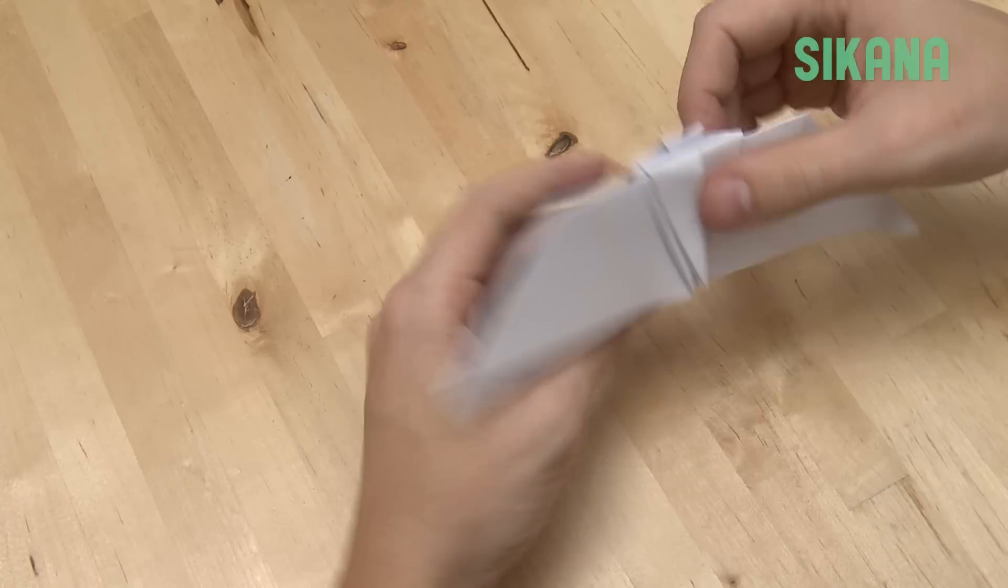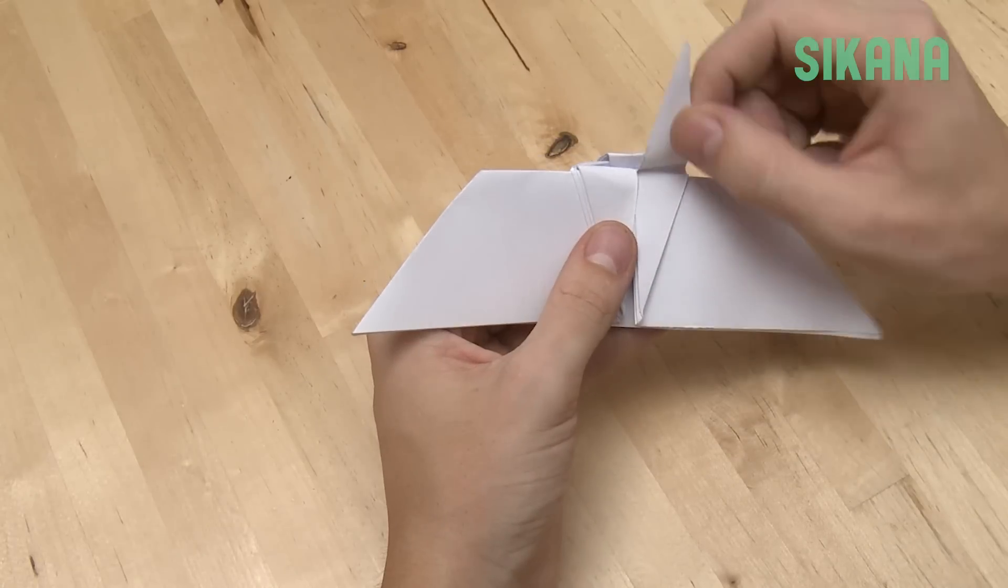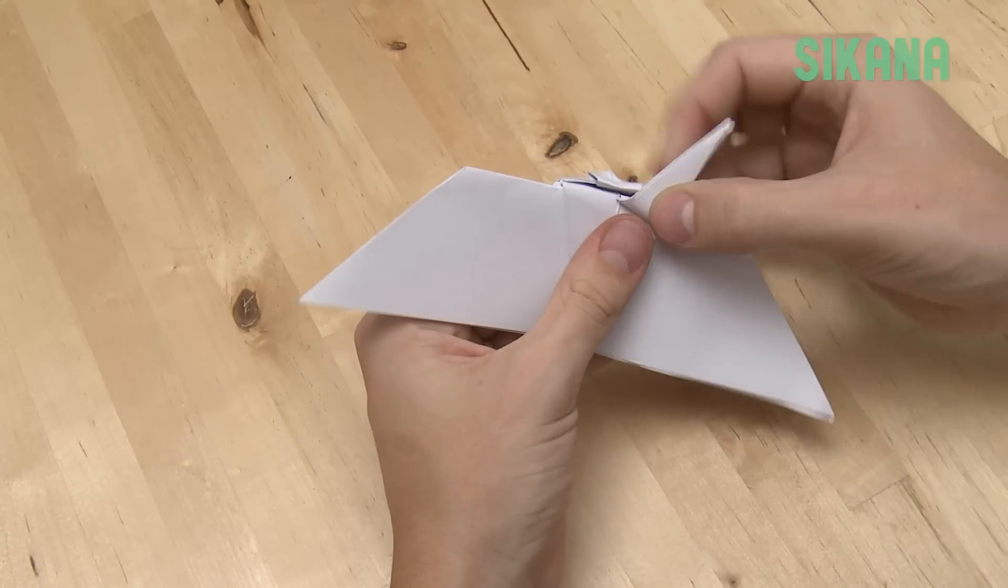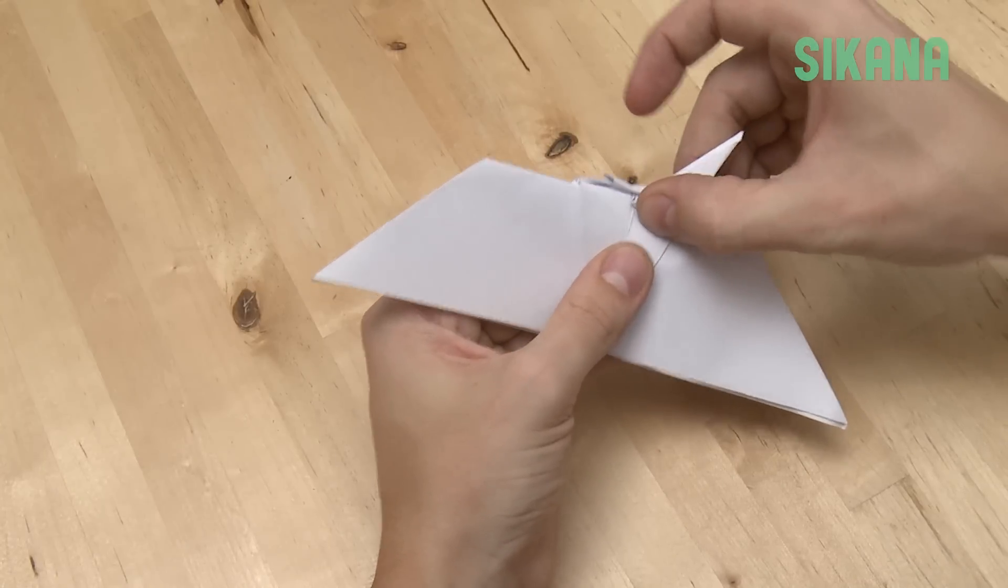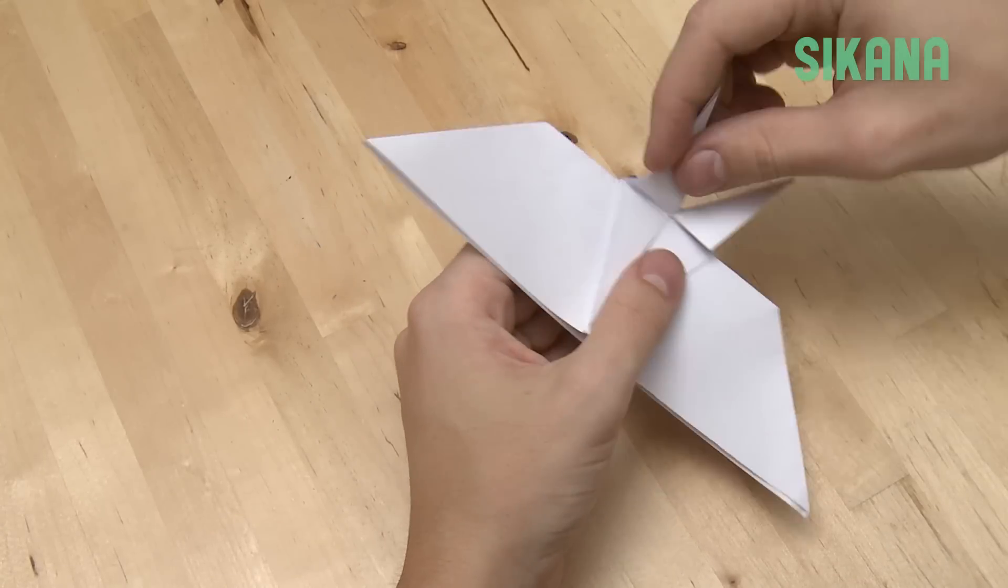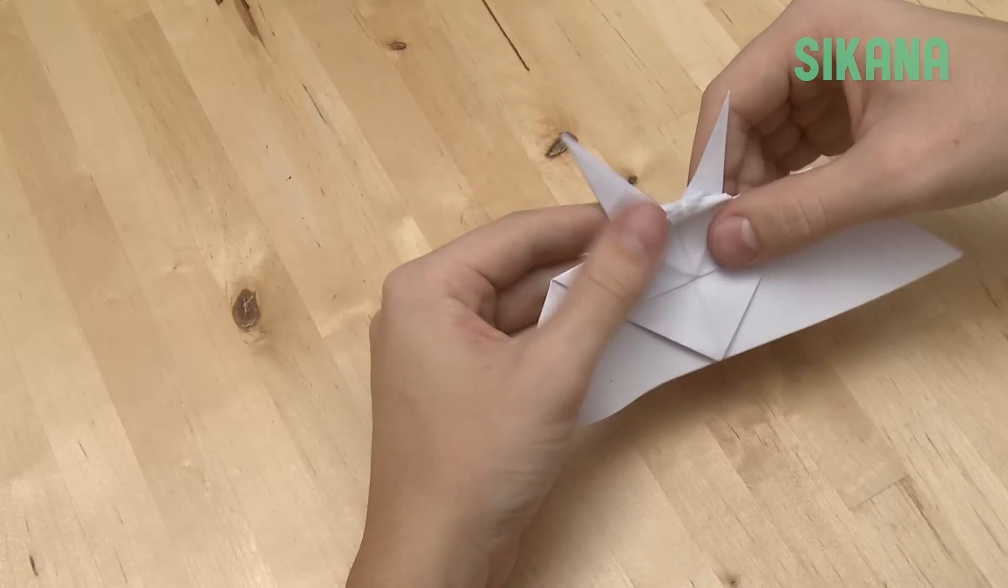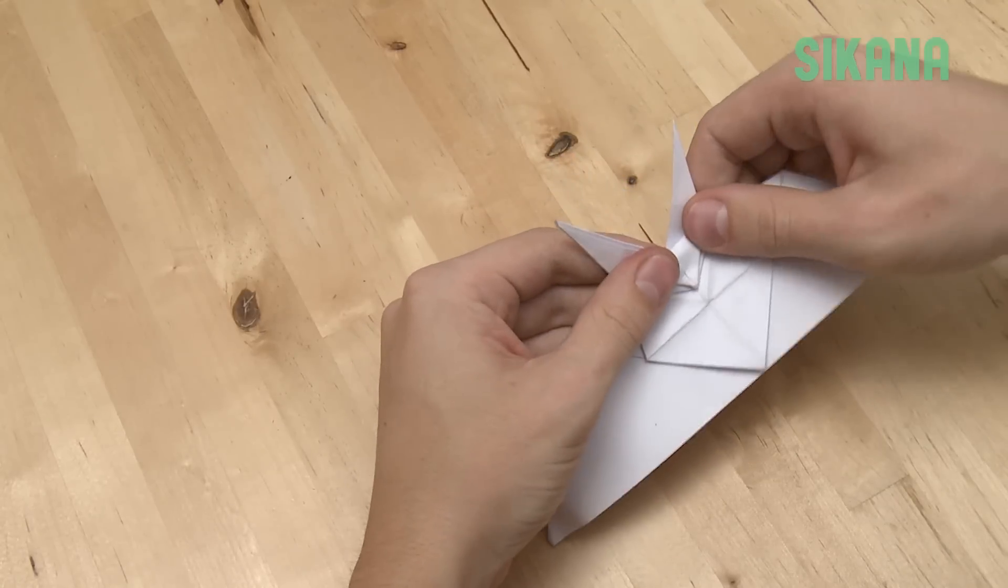The origami to make the ears. Lift this point up and fold it slightly to the side like this. Repeat for the other side. They must be the same length. Your bat's head is done.